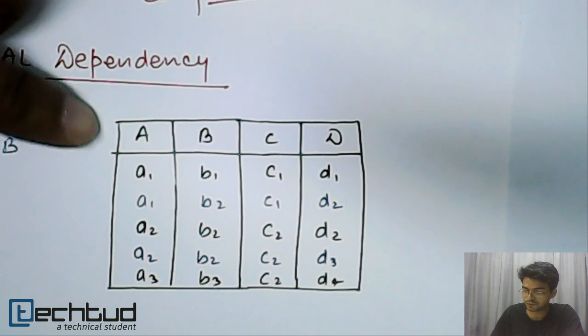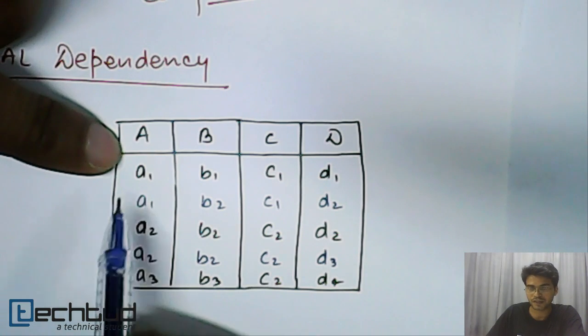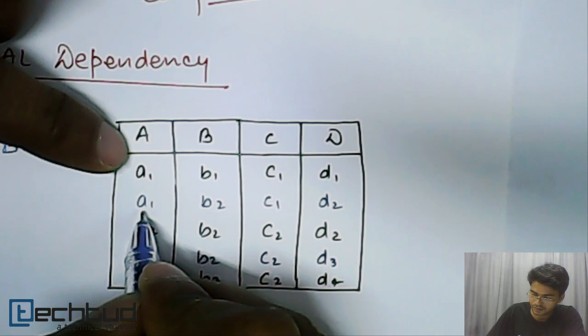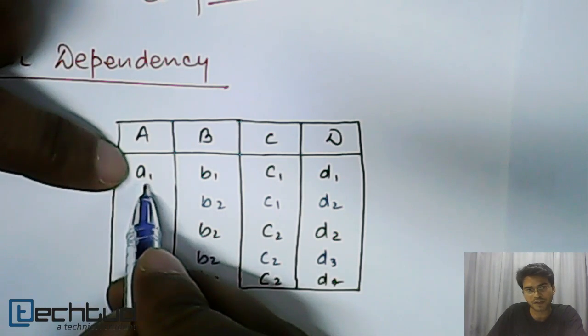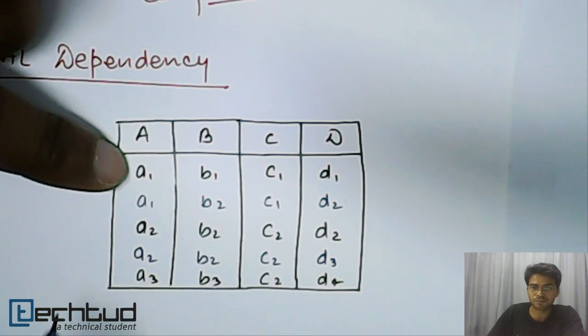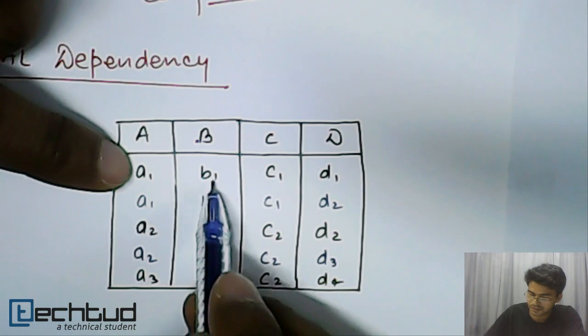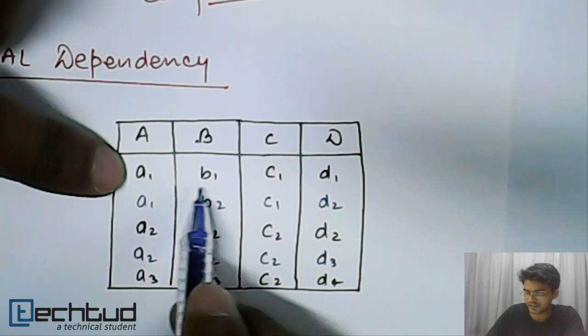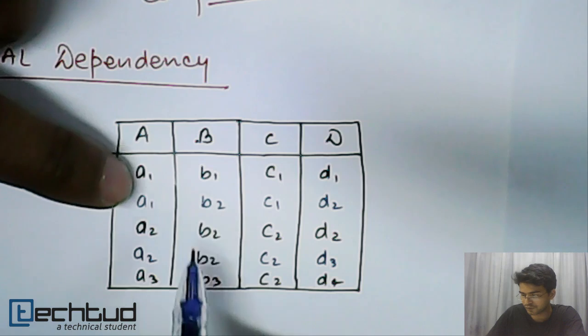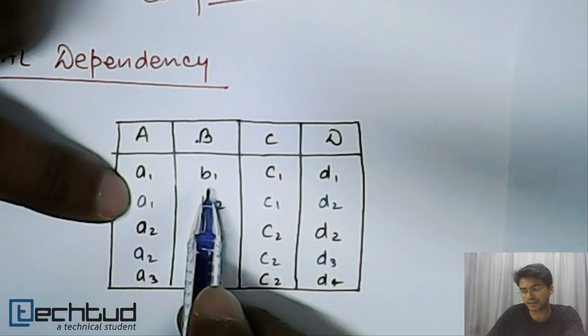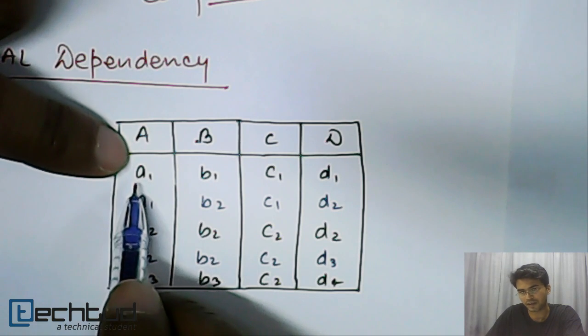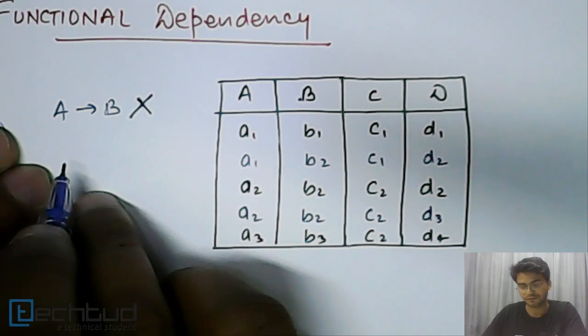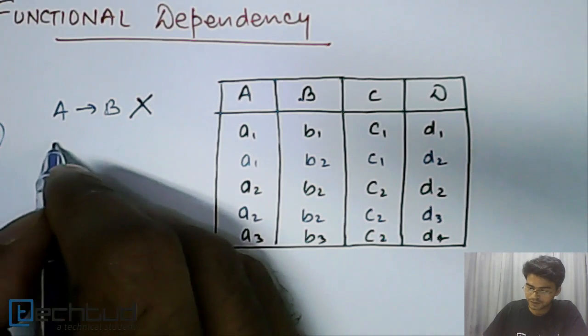Our approach will be to discard this, not to select this. We will keep a negative approach. We will try to find out an element in A corresponding to which two different Bs are there. I am choosing a₁ in this case. So across a₁ I will try to find out two different values of B. As we can see from the first two rows of this table that here a₁ is corresponding to b₁ and here it is b₂. So we have two different elements corresponding to a single element of A. It means it is not possible. Now we will go and check whether similar functional dependencies are there.